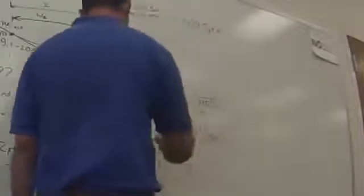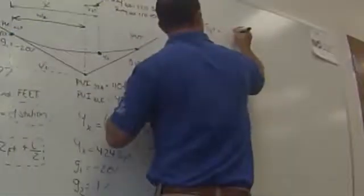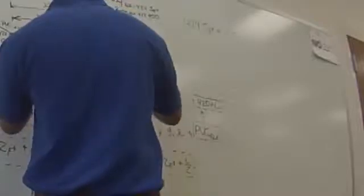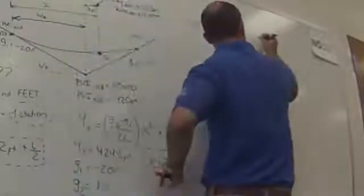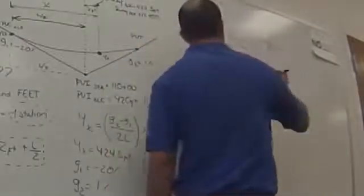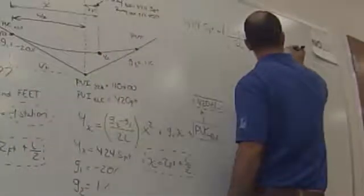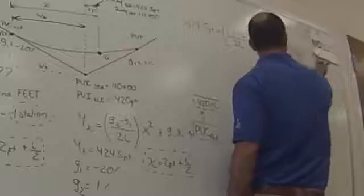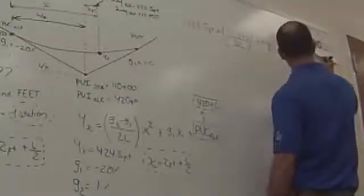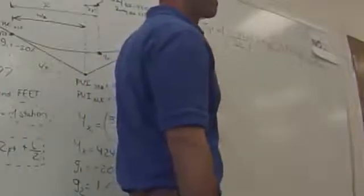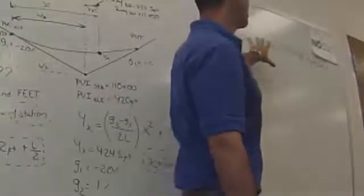So elevation 424.5 equals G2, which is 1, minus G1, which is minus 2, divided by 2 times L, times X squared, which is 2 plus L half squared, plus G1 minus 2, times 2 plus L half, which is X, plus 420 plus L. So how many unknowns? One. How many equations? One. So we can just find L.